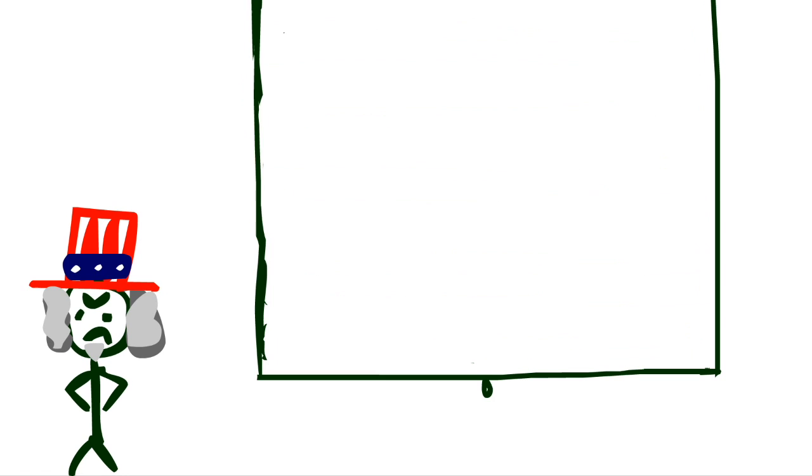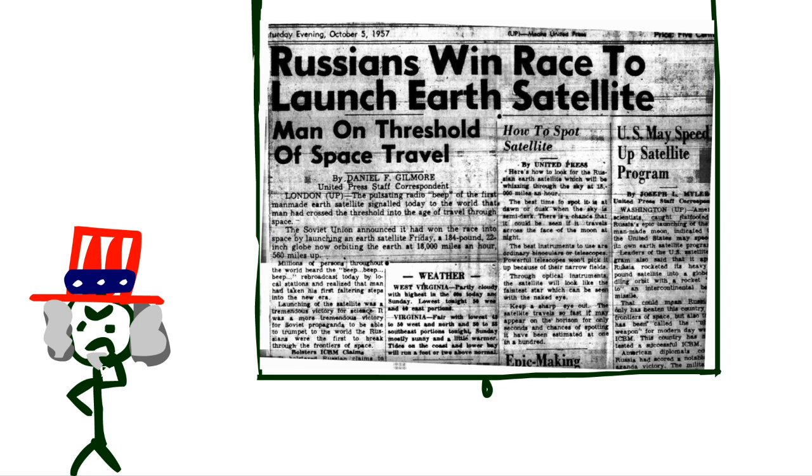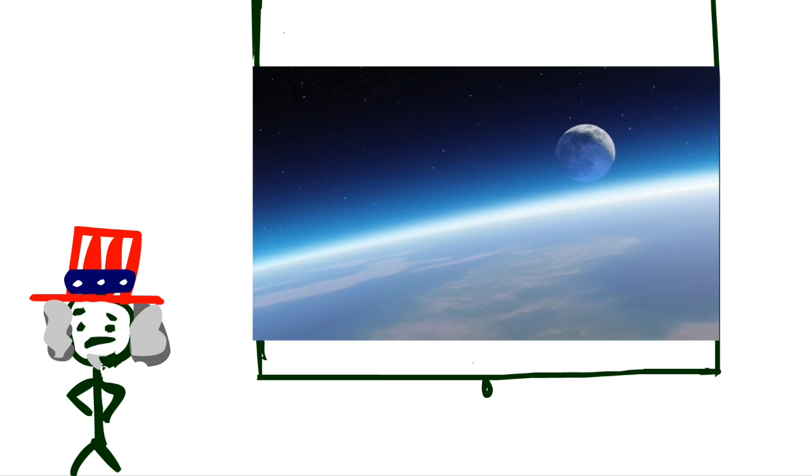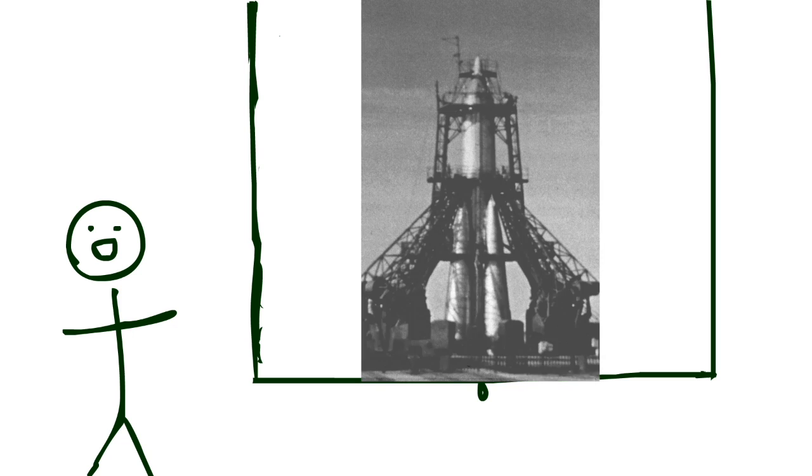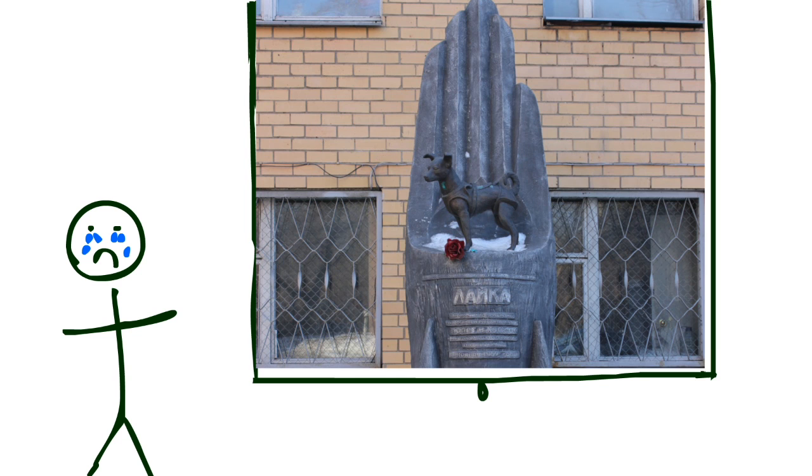On October 4th, 1957, 7:28pm, Russia launched Sputnik 1, making history as the first man-made object put in a consistent elliptical orbit around the Earth, and thus marked the start of the Space Race. This was followed by Sputnik 2, that fun fact carried the first space traveler, Laika the dog, who unfortunately perished during the trip.